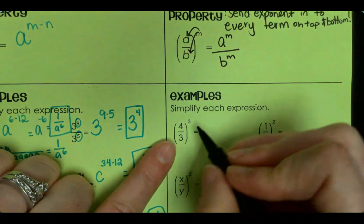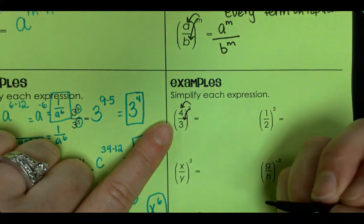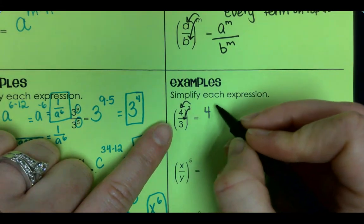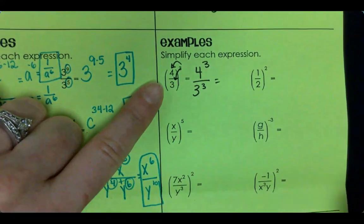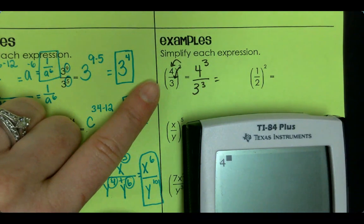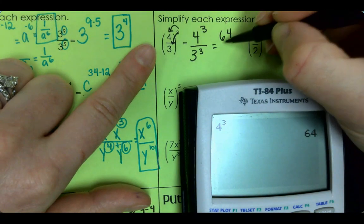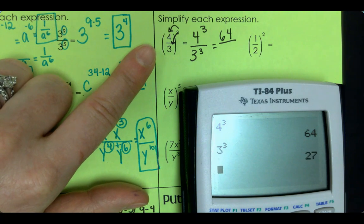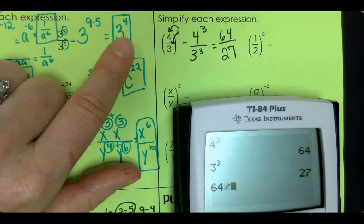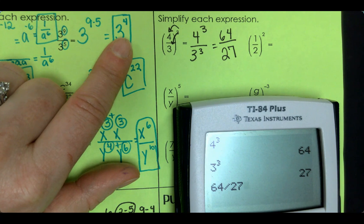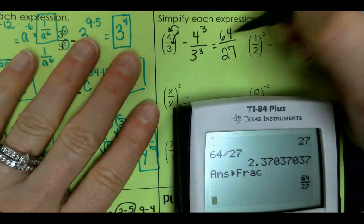Alright, so we're going to do these examples together. So 4 over 3 raised to the 3rd power. Send it in. Show your arrow. If there's no exponent, whatever the exponent is outside becomes a new exponent. 4 to the 3rd over 3 to the 3rd. We'll go ahead and put it in the calculator. And then you look and see if you can simplify that. So I'm going to put it in. Divide it. Enter. And then math. Enter, enter. And it does not reduce down. That is our final answer.